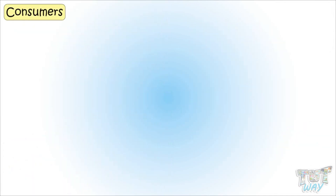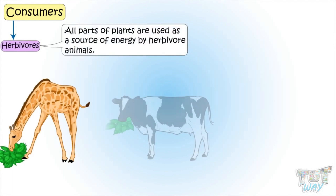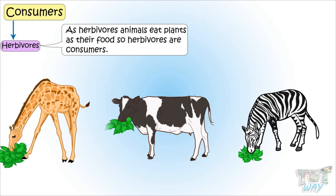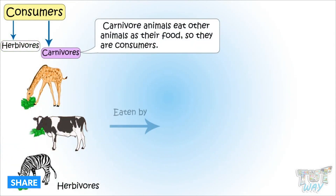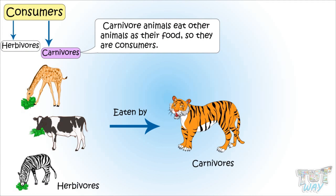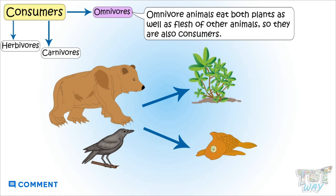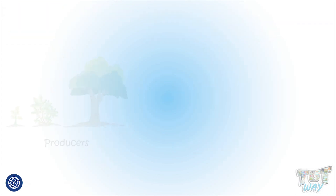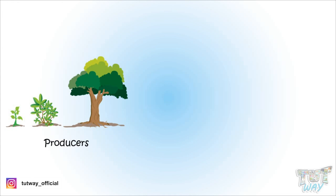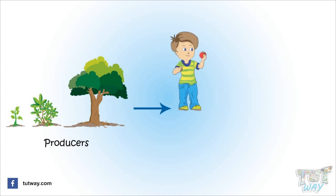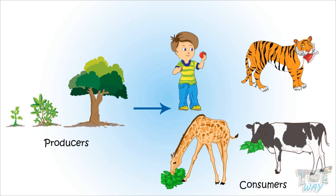Now let's see what are consumers. All parts of plants are used as a source of energy by herbivore animals, as herbivore animals eat plants as their food, so herbivores are consumers. And these herbivore animals are eaten by carnivores, so carnivores eat other animals as their food — carnivores are also consumers. Omnivore animals eat both plants as well as flesh of other animals, so omnivores are also consumers. So we learned that plants are the only living things that are producers that produce food; rest all the living things consume food, so they are called consumers.